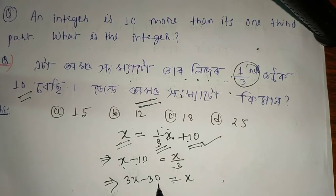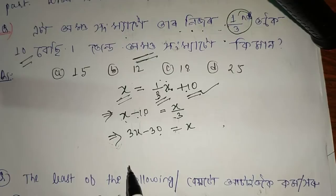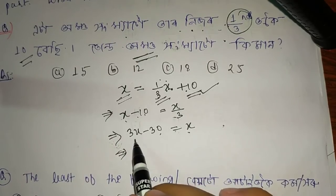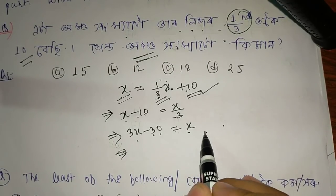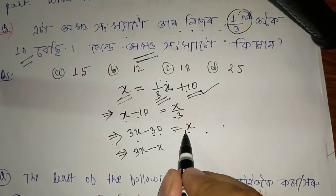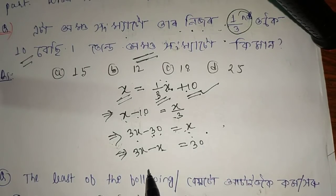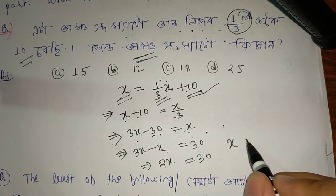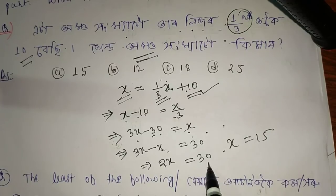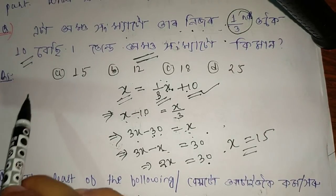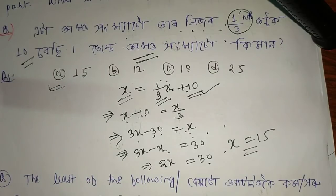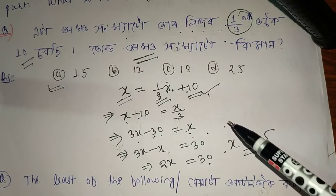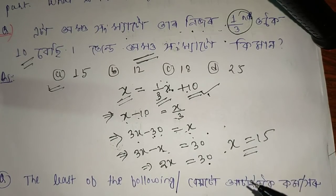So 3x minus 2x equals 30, meaning x equals 30. Wait — 3x minus x equals 30, so 2x equals 30, giving x equals 15. The answer is 15. That is the correct answer. Write all steps clearly in your exam.